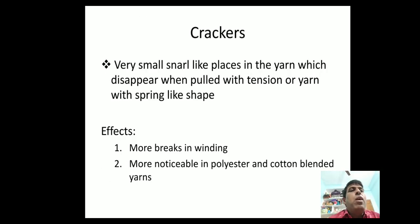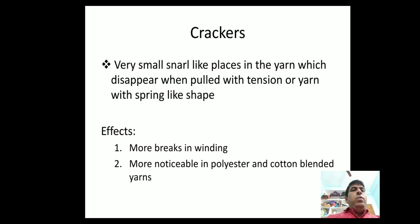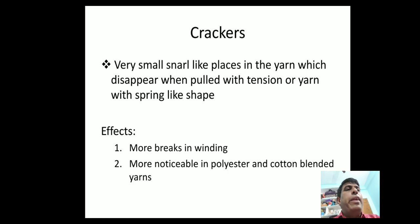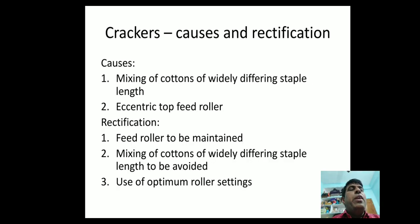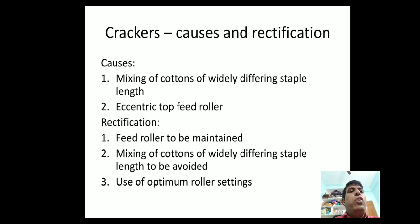Crackers are very small stone-like places in the yarn which disappear when pulled with tension, or yarn with a spring-like shape. Effects include more breaks in winding, and they are more noticeable in polyester and cotton blended yarns. Causes include mixing of cottons of widely differing staple length and eccentric top feed rollers.